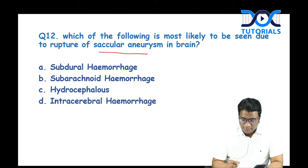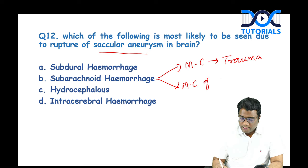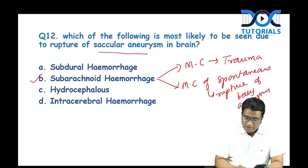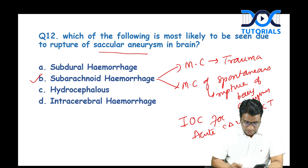Another question on subarachnoid hemorrhage caused by rupture of a saccular (berry) aneurysm. Remember: the most common cause of subarachnoid hemorrhage overall is trauma; the most common cause of spontaneous subarachnoid hemorrhage is rupture of a berry/saccular aneurysm, presenting with the worst headache of the patient's life. Investigation of choice: non-contrast CT scan.